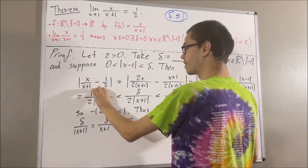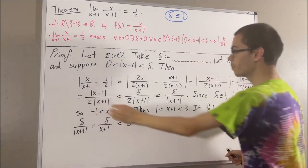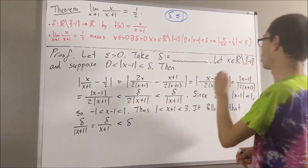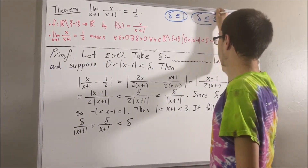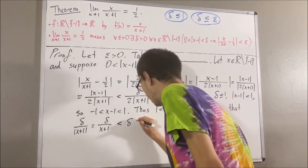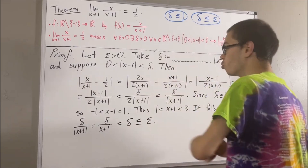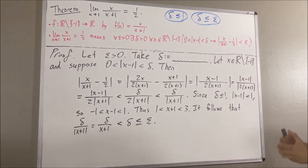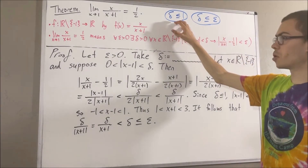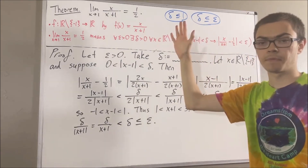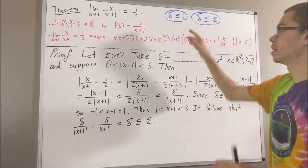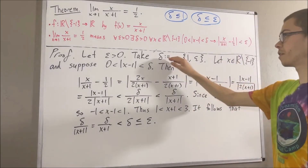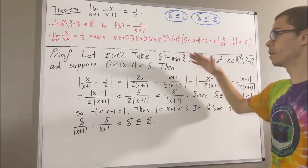At this point, we have made this expression less than delta, and we want to make it less than epsilon. All we've got to do is define delta so that delta is less than or equal to epsilon. If we do that, then delta is less than or equal to epsilon, so we have made this expression less than epsilon, which is what we wanted. So we're defining delta to be the smaller of a list of positive numbers — namely 1 and epsilon. If we define delta to be this positive number, then this argument will follow.